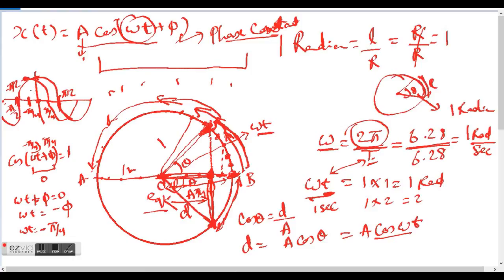Now that we have A cos(ωt + φ), another point: A can be 1, 2, 3, 4, or any value — it was taken as 1 only for the example. If A were 2, the graph would intersect the y-axis at 2; if 3, higher still. So this is how we derive the formula: the displacement of a particle in simple harmonic motion is A cos(ωt + φ).